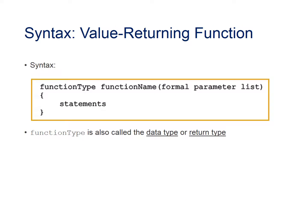The syntax for a value-returning function is as follows: function type, function name, your formal parameter list, and then your statements. The function type is also called the data type or return type.